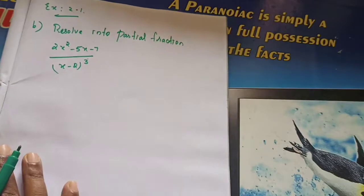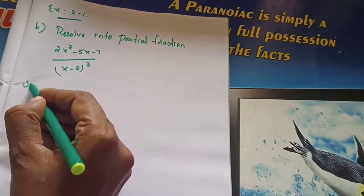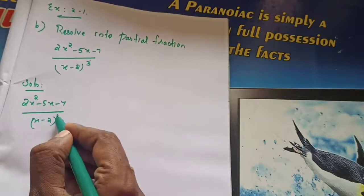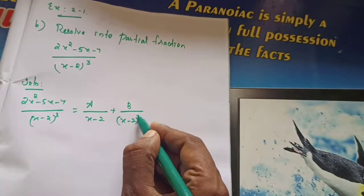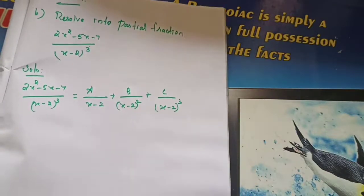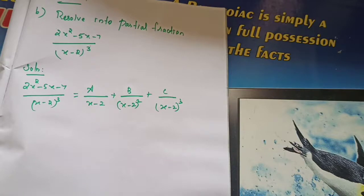The question is: 2x squared minus 5x minus 7 divided by x minus 2 the whole cube. Which type does this belong to? Denominator contains a repeated linear factor — x minus 2 the whole cube, which means x minus 2 repeated 3 times. So we write: 2x squared minus 5x minus 7 divided by x minus 2 whole cube equals A by x minus 2, plus B by x minus 2 whole squared, plus C by x minus 2 whole cube.